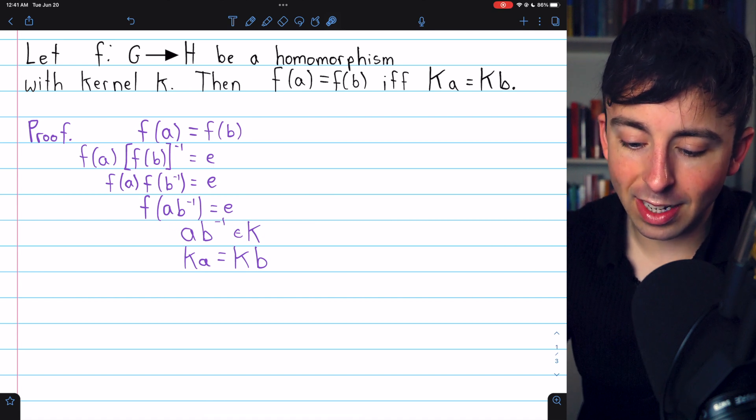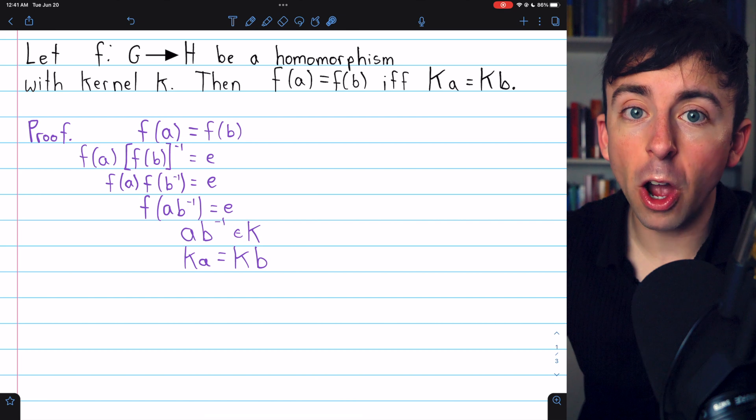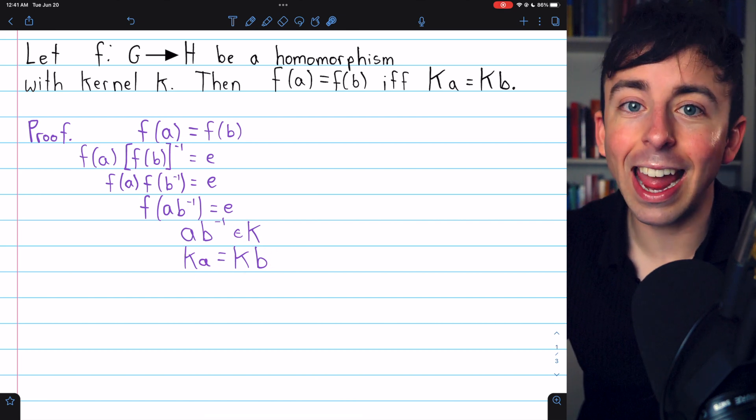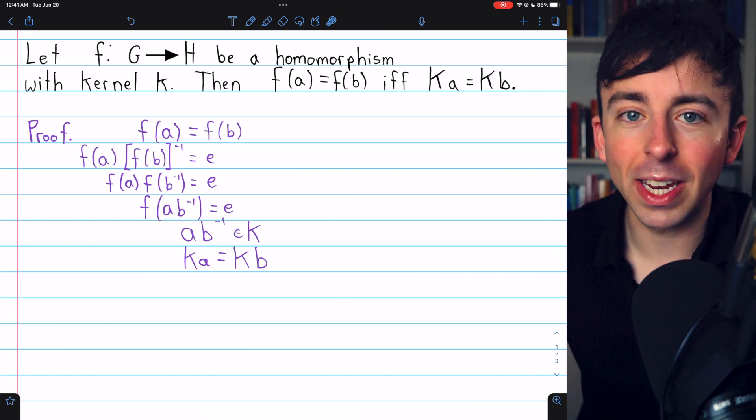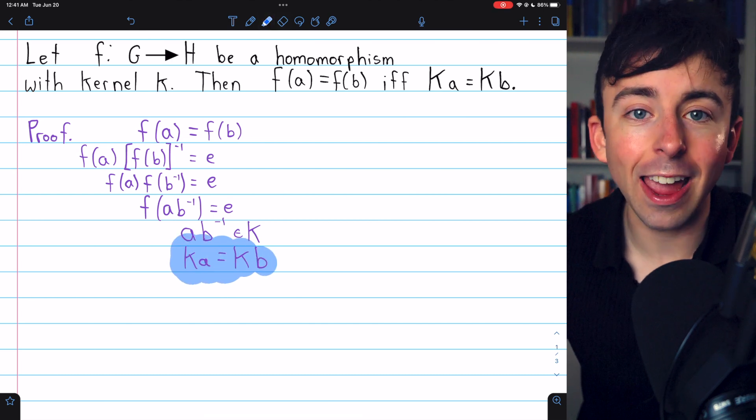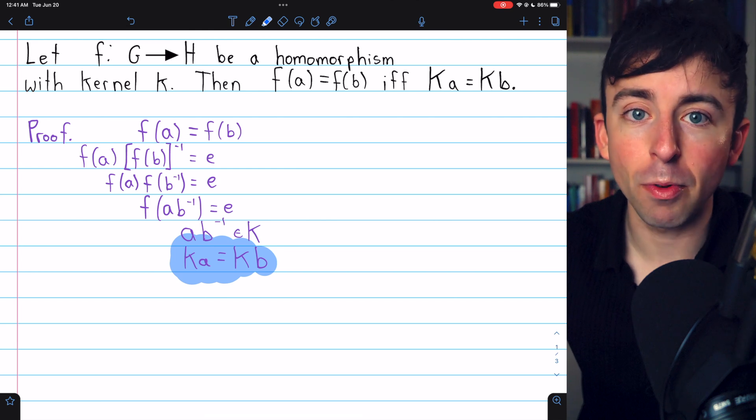So ab inverse is an element of K. But we previously proved this property of cosets that a coset Ka will equal a coset Kb if and only if ab inverse is an element of K. So we can conclude that Ka equals Kb as desired. Link in the description to the lesson where we prove that property.